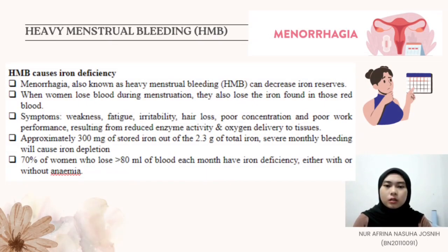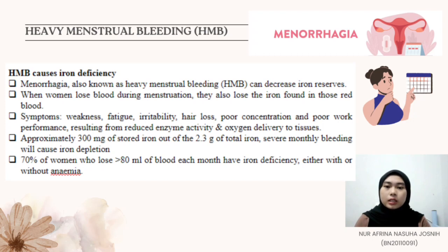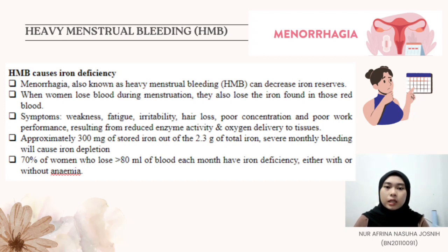Menorrhagia, also known as heavy menstrual bleeding, can decrease iron levels. This is defined as blood loss of more than 80 ml per cycle. When women lose blood during menstruation, they also lose the iron found in those red blood cells. Iron is an important component of hemoglobin, the protein responsible for transporting oxygen to tissues. Further depletion of iron stores caused by heavy menstrual bleeding can lead to iron deficiency anemia. Some causes of heavy menstrual bleeding include hormone imbalance and uterine fibroids.